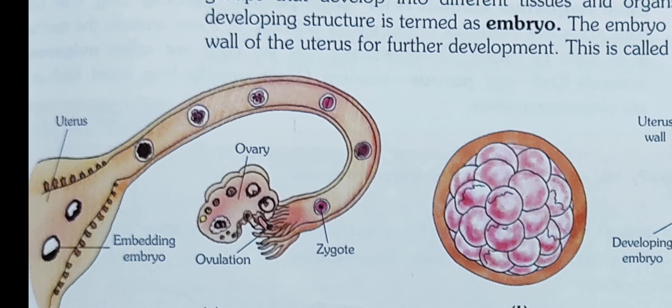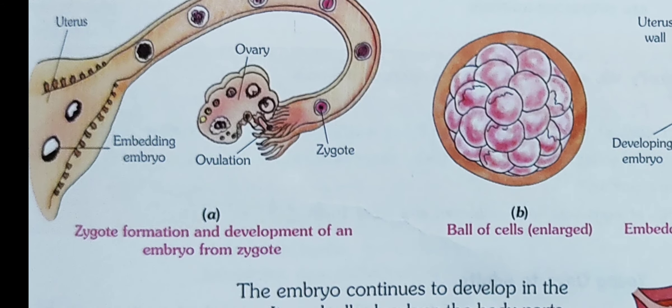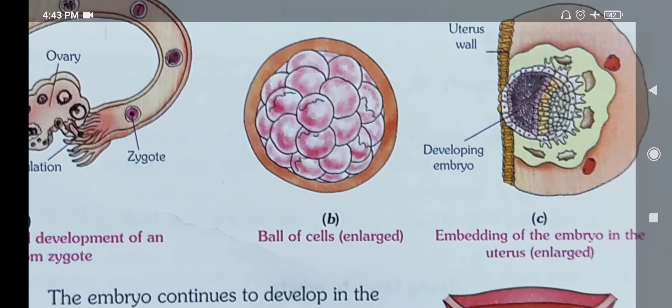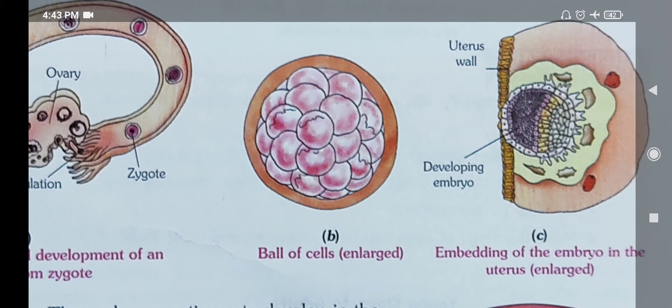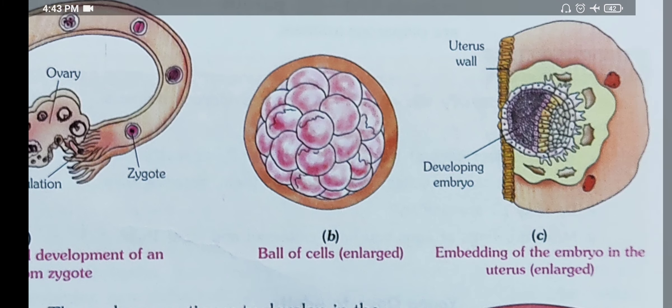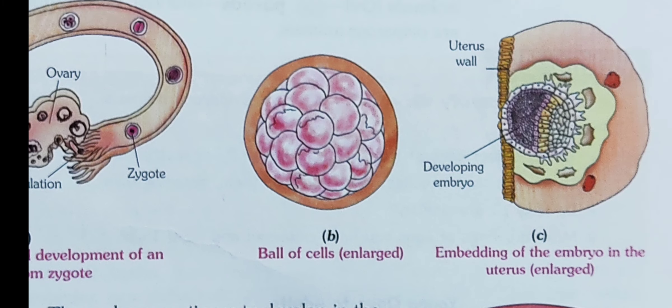You can see in the figure: zygote formation and development of an embryo from the zygote into a ball of cells, and then the embedding of the embryo in the uterus.